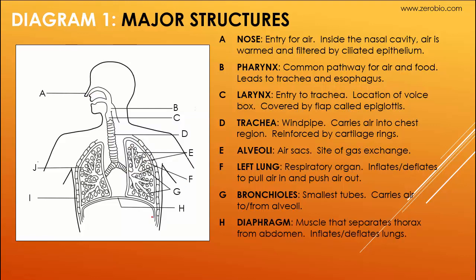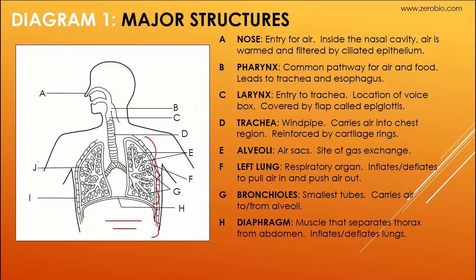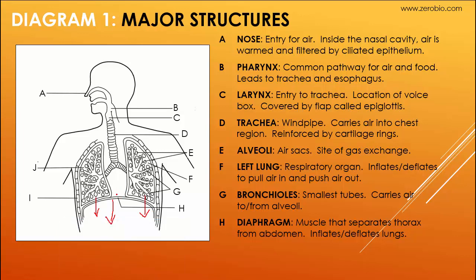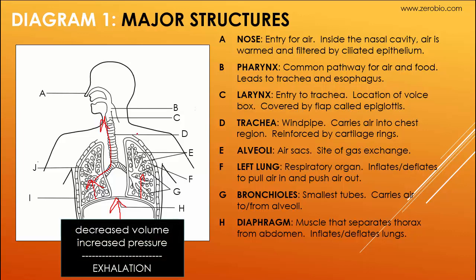H is the diaphragm — a muscle underneath the lungs. It separates the thorax from the abdomen, which contains the digestive organs. The diaphragm is used in breathing: when it contracts, it pulls downward, increasing the volume of the lungs and decreasing the pressure, which pulls air in. To exhale, the diaphragm springs back up into its relaxed position, compressing the lungs, decreasing volume, increasing pressure, and forcing the air out.